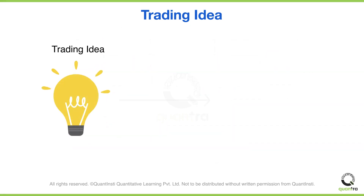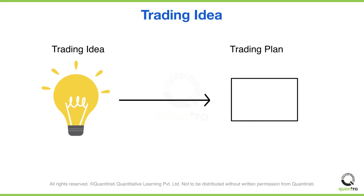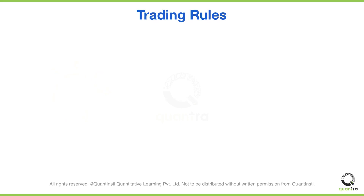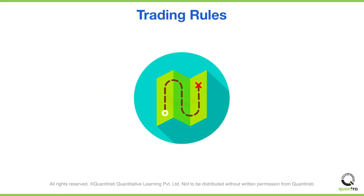Notice how he converted his ideas into a clear plan — a plan where he knows when to enter and when to exit. The defined entry and exit conditions are also referred to as trading rules. Trading rules are formulated to get a clear roadmap for trading — a map that tells you at which point which turns to take in order to reach the destination.